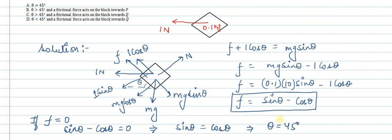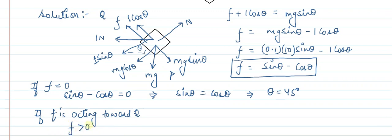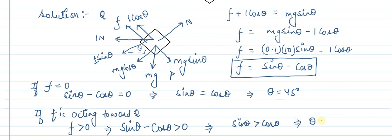Let's assume the force of friction is acting towards Q. Q is on the upward side and P is on the downward side. If F is acting towards Q, then F should be greater than 0. From the equation, sin theta minus cos theta should be greater than 0, meaning sin theta should be greater than cos theta. This means theta should be greater than 45 degrees.